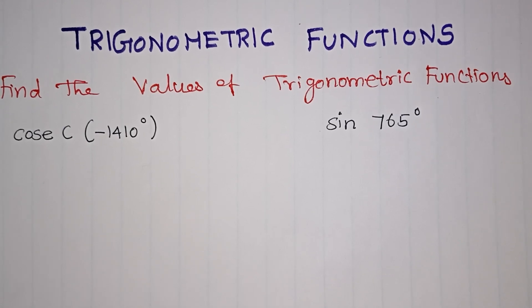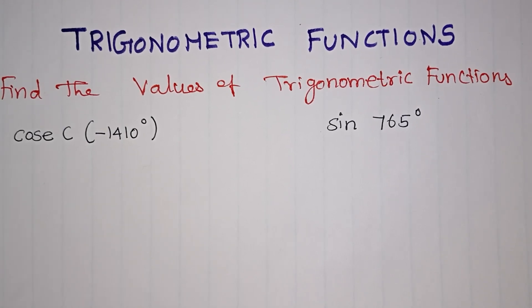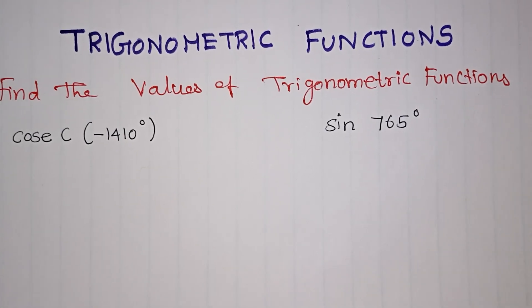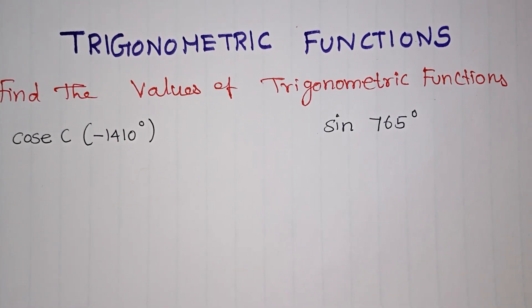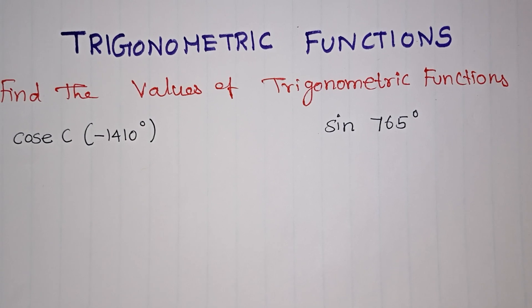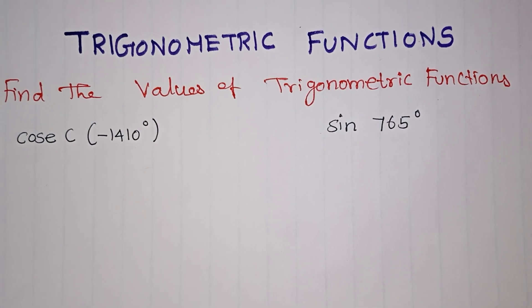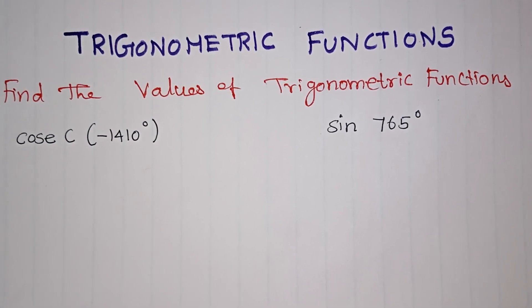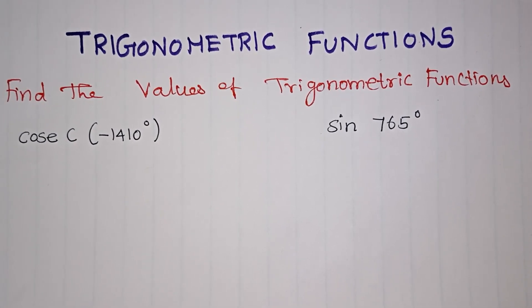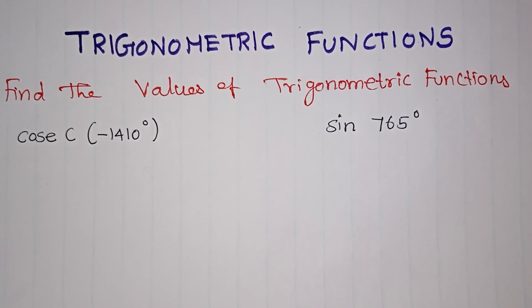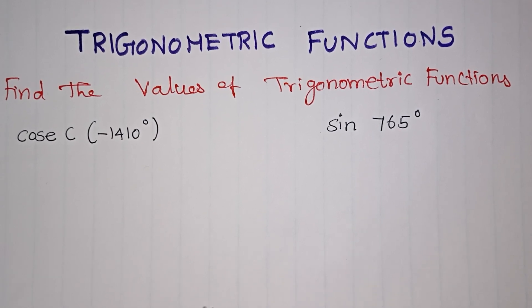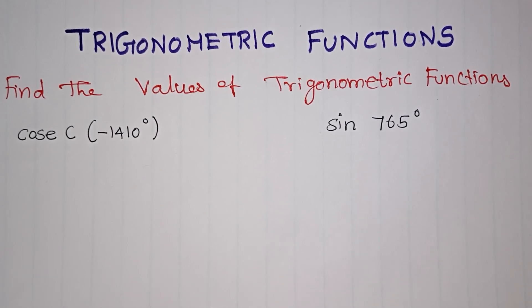Hi students, we have to check out how to find the values of the trigonometric functions. We already have to check out the special angles of 30, 45, 90, 180, and 270 degrees. We can see how to check the values of the trigonometric function.